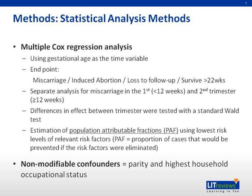Differences in effect were tested using a standard Wald test. The risk of miscarriage for each individual woman was estimated from the Cox regression model, providing the background for estimating the population attributable fraction (PAF), which is the proportion of assessed risk of miscarriage associated with exposure to a risk factor — i.e., the PAF represents the proportion of cases that would be prevented if the risk factors were eliminated. Parity and highest household occupational status were included as non-modifiable confounders.